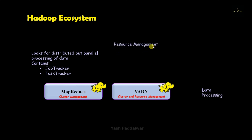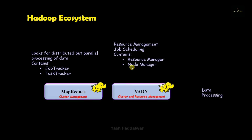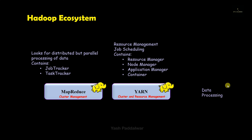Now let's look at the YARN section. YARN is a resource management tool generally used for scheduling jobs. It makes efficient use of all resources and schedules jobs in a systematic way. The YARN architecture contains: a resource manager which manages the resources; a node manager which tracks all operations on every node; an application manager which manages resources for every application; and a container, which is the actual RAM or CPUs required for carrying out a task.